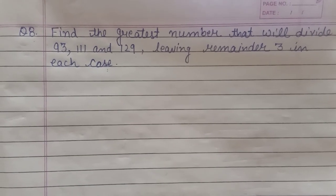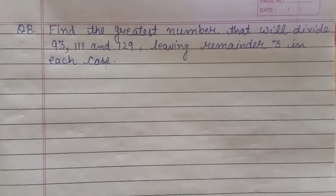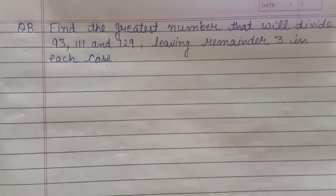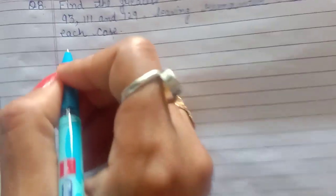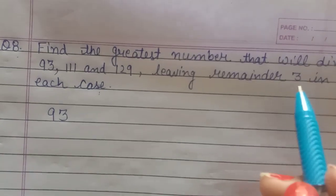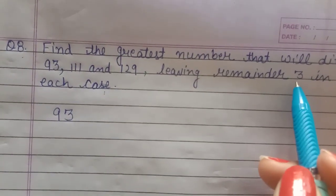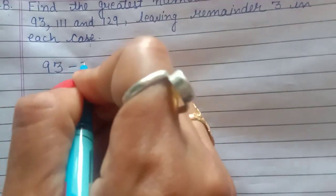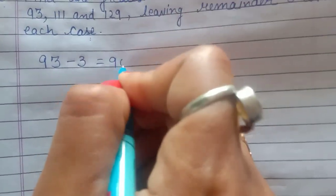It's also a hint given in your book. Since they have given us 93, we will subtract the remainder - whether it is 3, 5, 7, or whatever - we will subtract it. So 93 minus 3 equals 90.